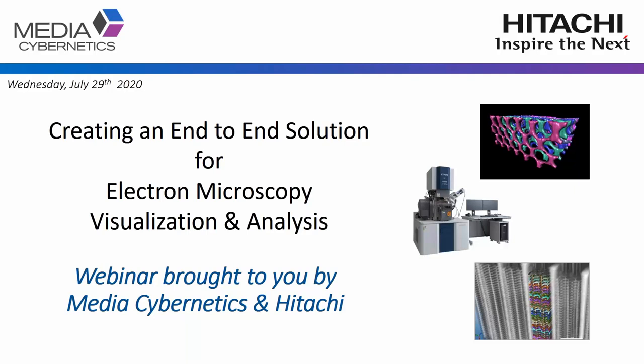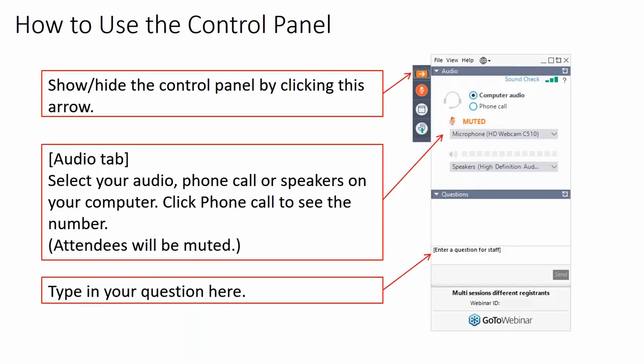Before we get started with today's webinar, I'd like to handle a few of the logistics. This is how to use the control panel, which you should see in the upper right-hand corner of your screen. You can show and hide the control panel by clicking this arrow. Select your audio — phone call or speakers on your computer. All attendees will be muted during this webinar. When you have questions, please type them in the question box. We will take questions and answers at the end of this webinar. With that, I'd like to introduce Mr. Jameel J. Clark.